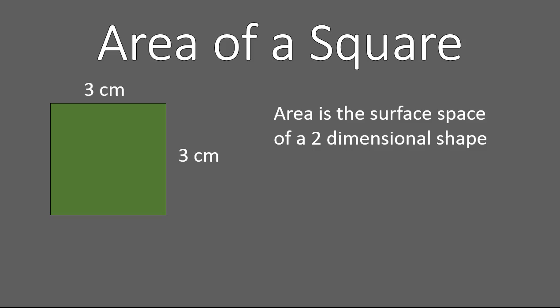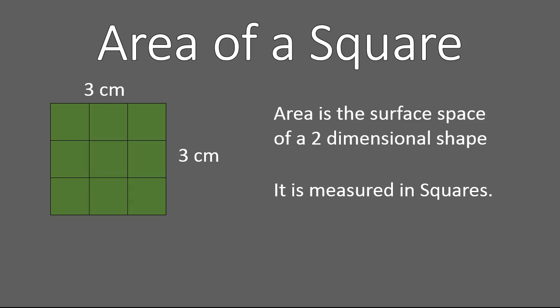First, let's talk about area of a square. The area is basically the surface space of a two-dimensional shape, a two-dimensional figure of some kind. This square, you can see, has a side length of three centimeters. One characteristic of a square is that all side lengths are the same, and also that they have 90-degree angles. The area of a square is measured in how many squares will fill up this square. You'll notice that there are nine squares that can fit perfectly to cover up this three by three square.